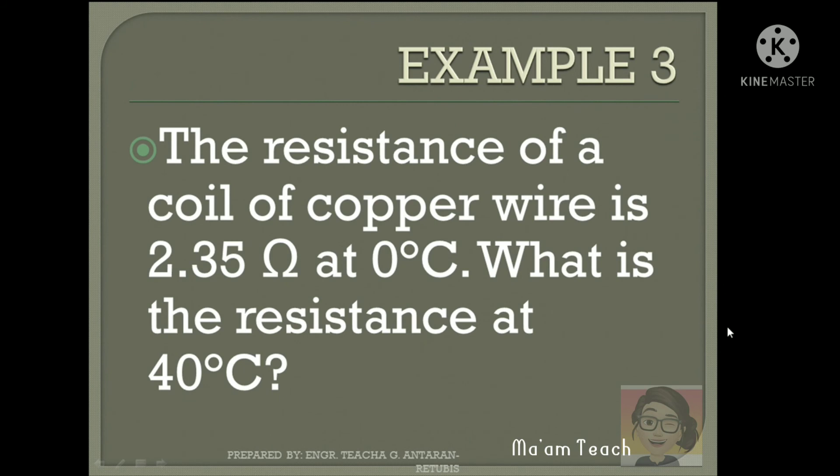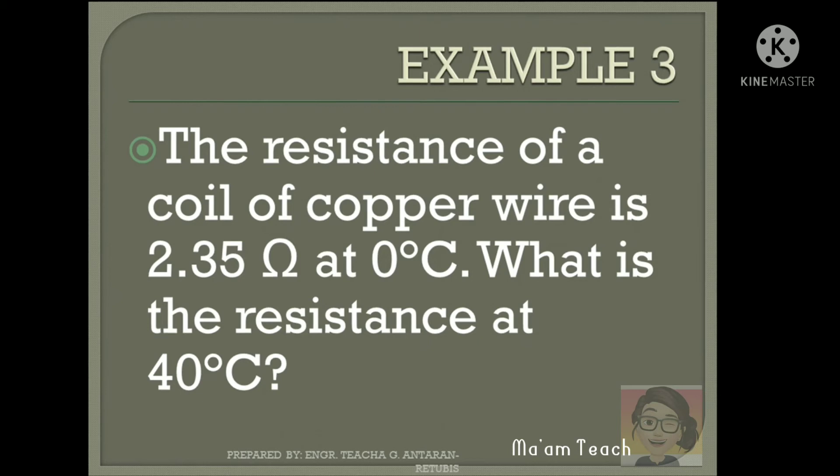Example 3: the resistance of a coil of copper wire is 2.35 ohms at 0 degrees Celsius. What is the resistance at 40 degrees Celsius?